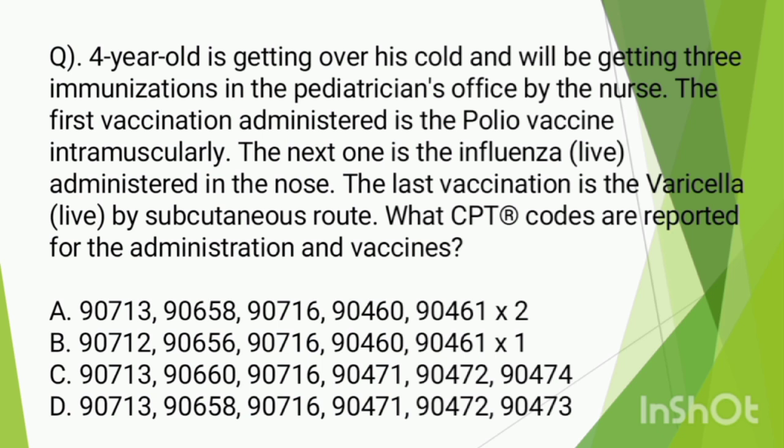The first one is the polio vaccine intramuscularly. The next one is the influenza live, administered by nasal route. Then the varicella live, administered by subcutaneous route. So if you have this question, you will have to clarify that the administration route is clear.